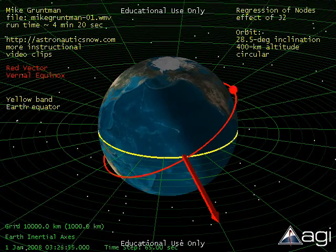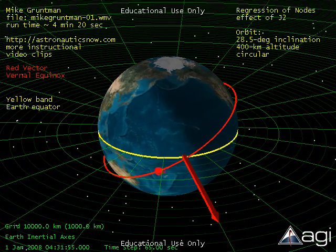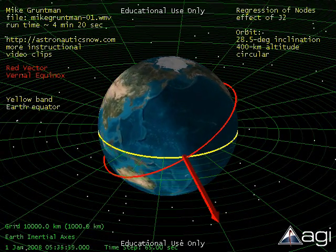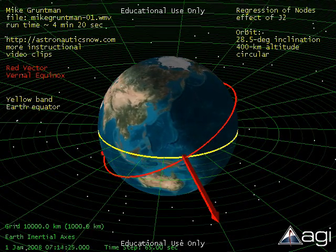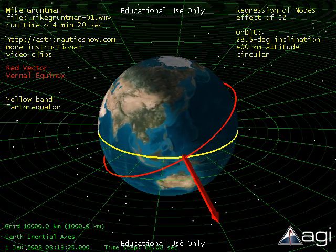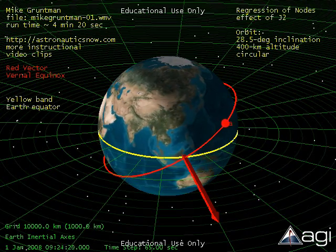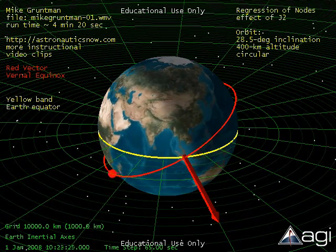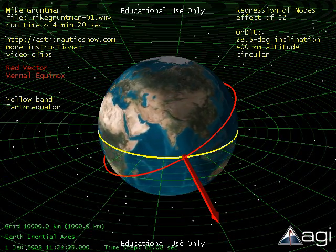More video clips illustrating other effects of interest to space mission design and spacecraft design can be found at the website astronauticsnow.com. The simulations are performed using AGI's STK.